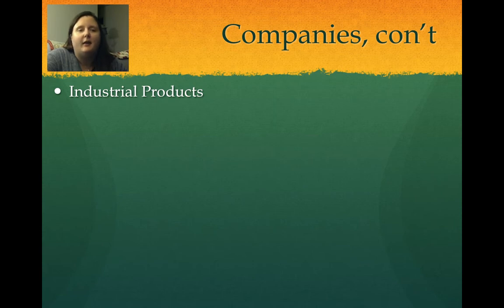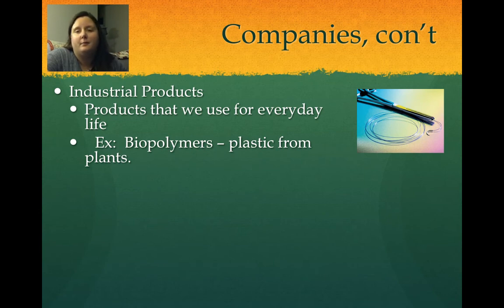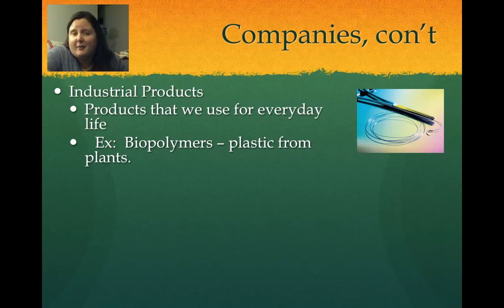Companies involved in biotech can also produce industrial products. One industrial product is a biopolymer. We're used to plastics all around us — water bottles, packaging — which are made from petrochemicals derived from ancient oil fields. A better way to make plastics is to get them from natural sources. Scientists have been able to make biopolymers from plants, which is better for the environment, and they're working to make this inexpensively to replace fossil fuels.